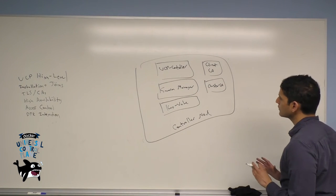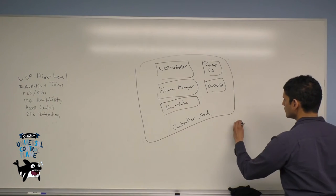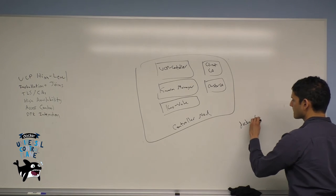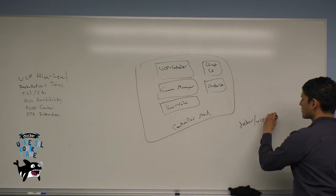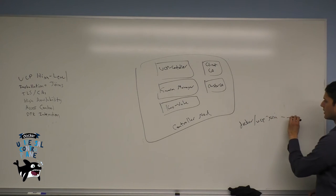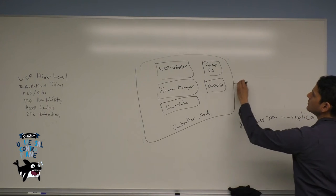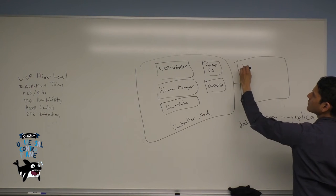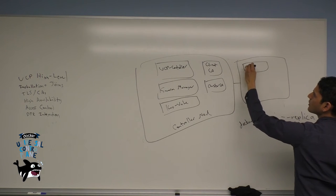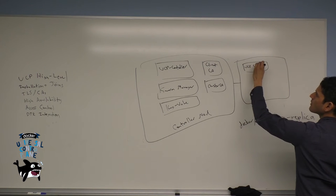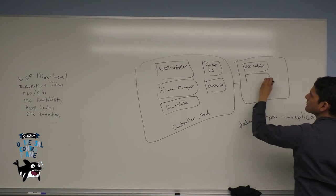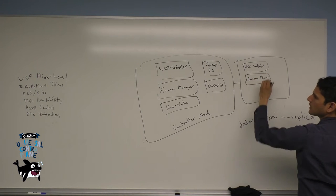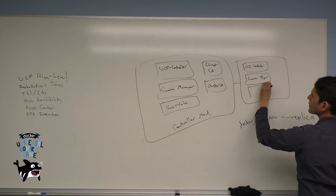So this allows you to create a new node which now mirrors several of these containers. So the UCP controller, the swarm manager, and the key value store.